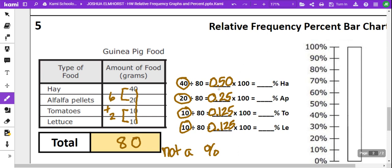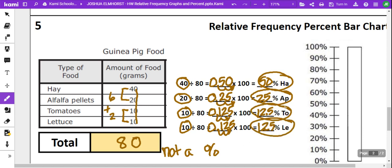So now we multiply by 100, move the decimal over two spots, 1, 2, 1, 2, 1, 2. So we have 50% hay, 25% alfalfa pellets, 12.5% tomatoes, and 12.5% lettuce.